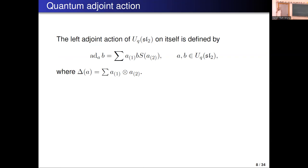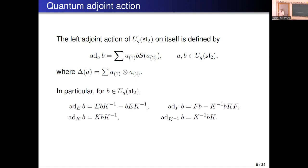We are going to need the quantum adjoint action. The left adjoint action of U_q(SL2) on itself is defined as: ad_A of B equals the sum of A1 times B times antipode of A2, where the coproduct of A is the sum of A1 tensor A2. Computing explicitly: ad_E acting on B gives EBK inverse minus BEK inverse; F acts on B as FB minus K inverse BKF; and K and K inverse simply act by conjugation.